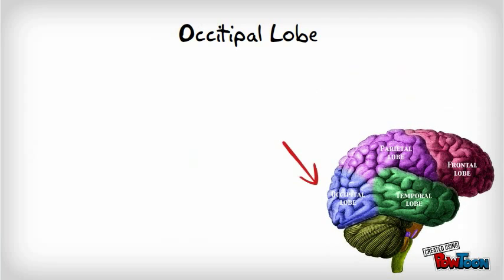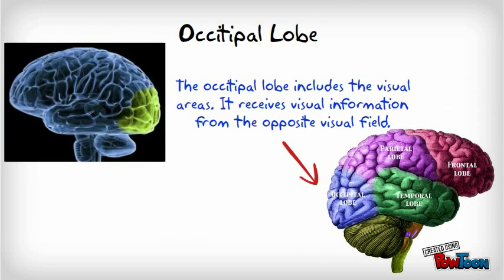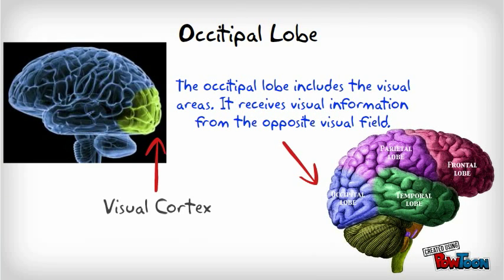The occipital lobe includes visual processing areas. It receives visual information from the opposite visual field.